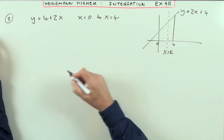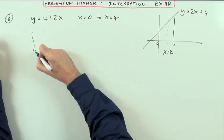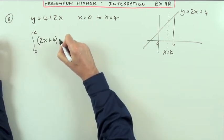So that means that the area on the left-hand side, the area from 0 to k, under—I think I'll write it the other way around—2x plus 4 dx